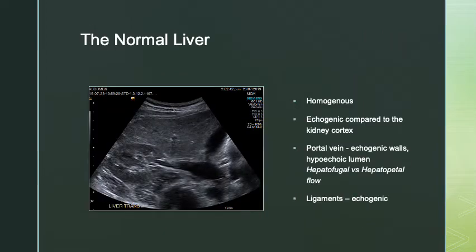When we look at our normal liver, the echotexture is quite homogenous. It tends to be echogenic compared to the kidney cortex. Our portal veins have echogenic walls with hypoechoic or anechoic lumen. The ligaments also appear quite echogenic on ultrasound because of the fibrous tissue they're made of. The walls of our hepatic veins don't tend to appear as bright as our portal veins.